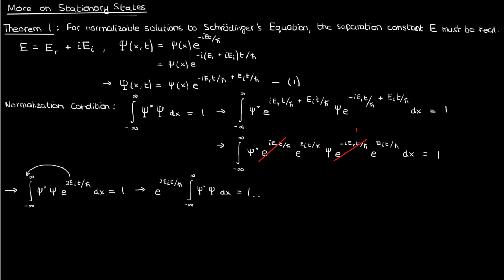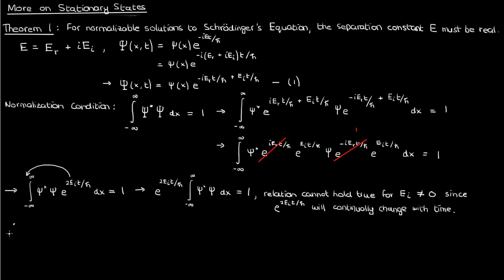The two exponentials with E_i come together, and this exponential term can be taken outside the integral because it's only a function of t and we're integrating with respect to x. We're left with a constant integral times this exponential. Since small ψ only depends on x, the integral is fixed, but the exponential changes with time. We cannot have an exponential changing with time multiplying a fixed constant and have that product equal the fixed constant 1 — the only way is if E_i equals 0, meaning E must be real.